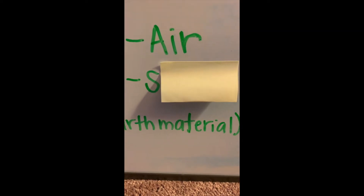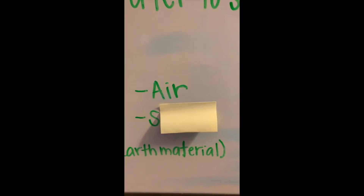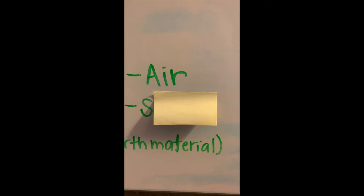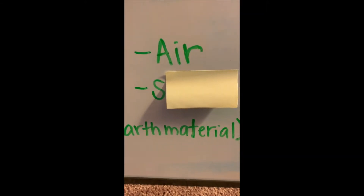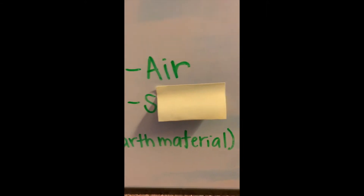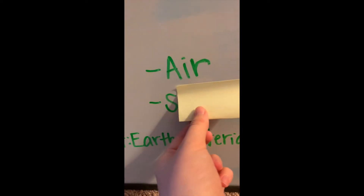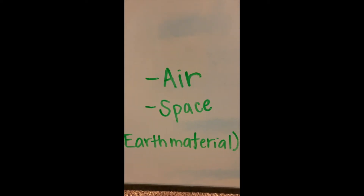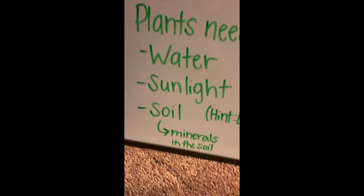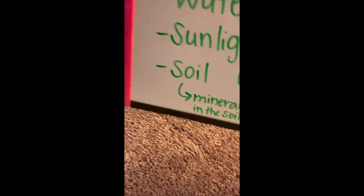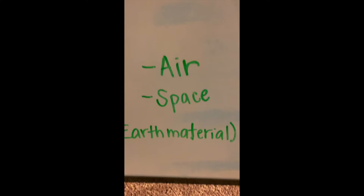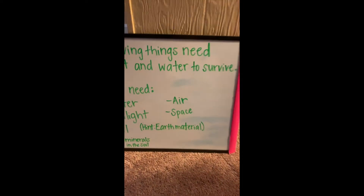And this last one starts with an S. We haven't talked about this in science much — we might have talked about it sometime during our grow time, talking about personal space. So plants need water, sunlight, soil — or the minerals in the soil — air, and space to survive.